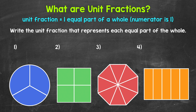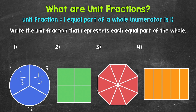The first thing we need to do is figure out how many equal parts the whole circle has been divided into. We count one, two, three equal parts. Since we have three total equal parts, the denominator is going to be three. Each equal part is one out of the three total equal parts, so our numerator is one. Each equal part is one third of the whole circle. The unit fraction that represents each equal part of the whole here is one third.